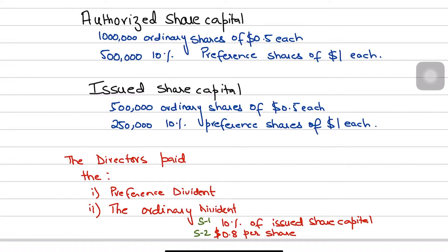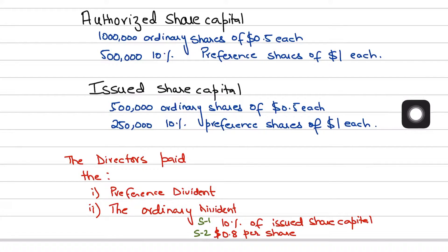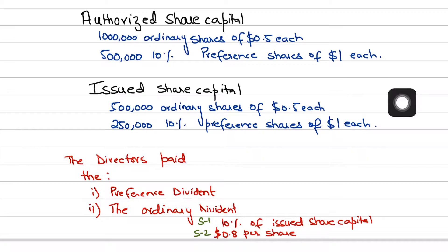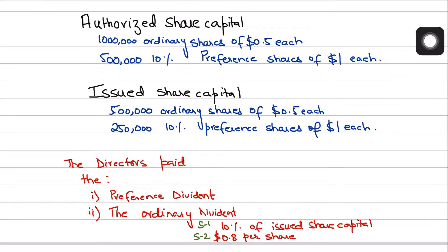In this question, the authorized share capital is 1 million ordinary shares of $0.50 each — that is the face value or nominal value per share — and 500,000 10% preference shares of $1 each. We are not really concerned with the authorized share capital because it represents the maximum capital the company can issue, and it is not reported in the statement of financial position.